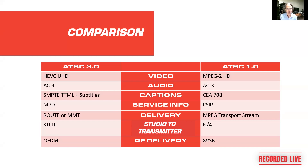Right now in the United States, the HEVC codec is going to be used, though that's not carved in stone in the standard. The current ATSC 1.0 uses MPEG-2 with a highest resolution of 1080i. The HEVC codec can do 4K, supports high dynamic range and wide color gamut, and can support up to 120Hz frame rate. There are a bunch of options available to broadcasters, including very low resolution streams if they want more programs at lower resolution.